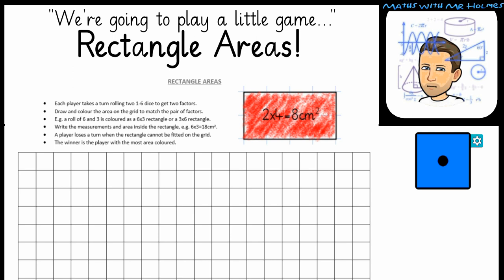Let's have a look at the rules then. So each player is going to take turns rolling a 1 to 6 die, roll it twice and get two factors. So let's do that. A 1 and a 6.